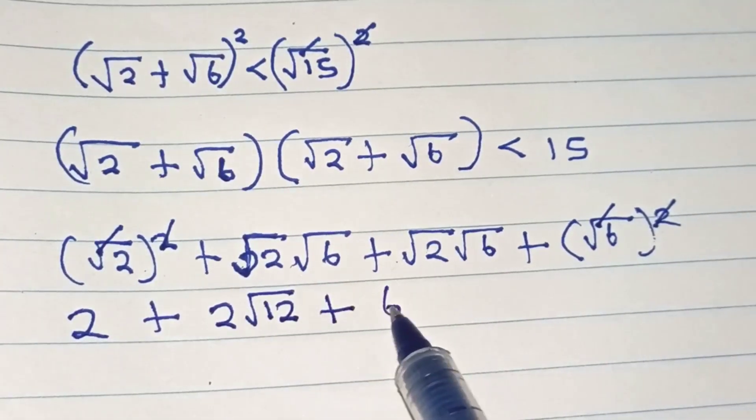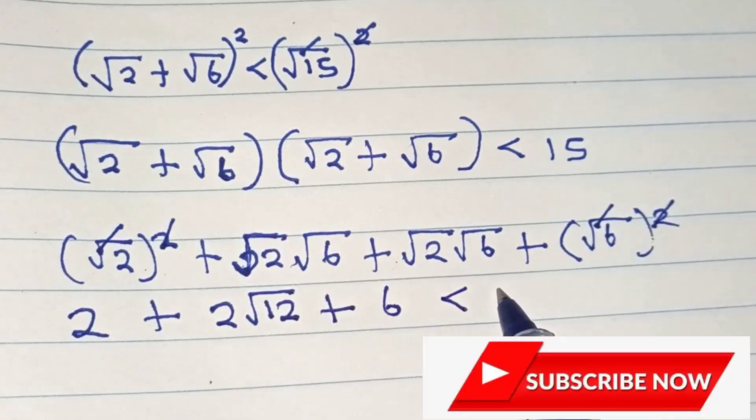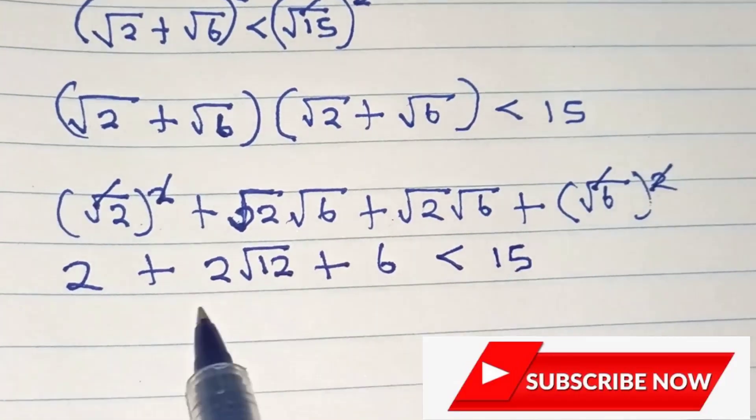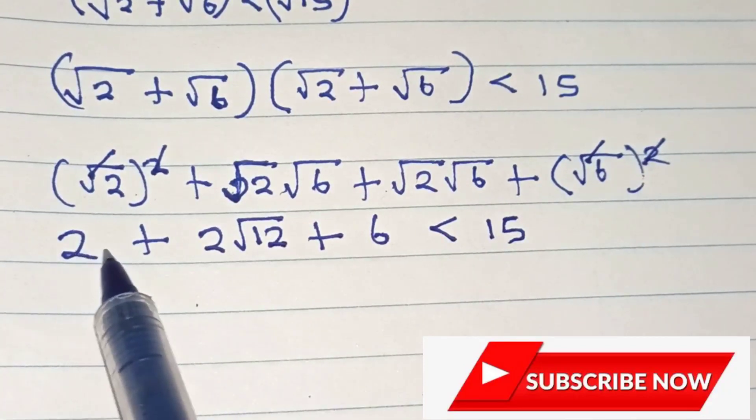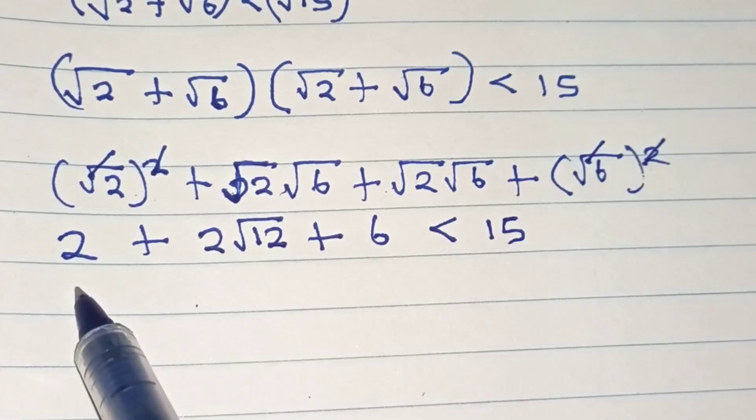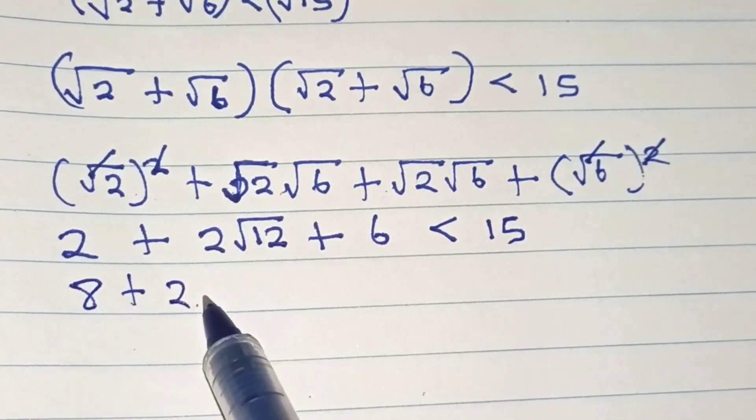Combining like terms, we have 2 plus 6, which is 8, plus 2 square root of 12, which is less than 15.